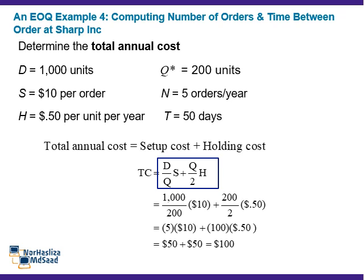Example 5: Computing combined cost of ordering and holding at Sharp Incorporation. Sharp Incorporation wants to determine the combined annual ordering and holding cost. To determine the total annual cost, we add setup cost to holding cost. Using this equation, the total annual cost equals $100. These are the annual setup and holding costs; the $100 total cost does not include the actual cost of goods.